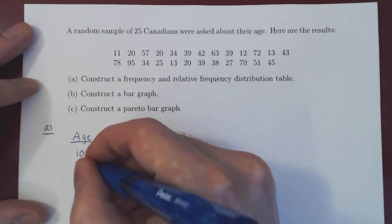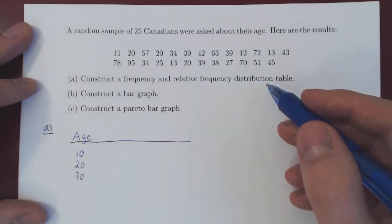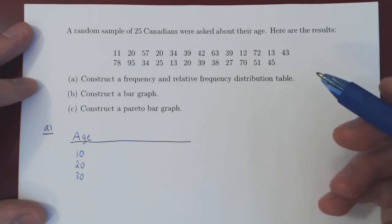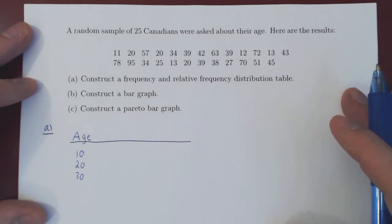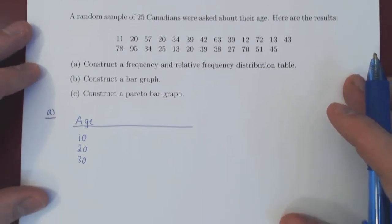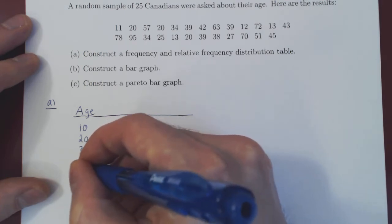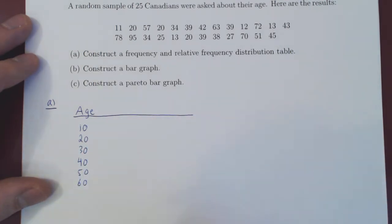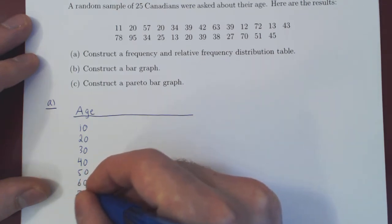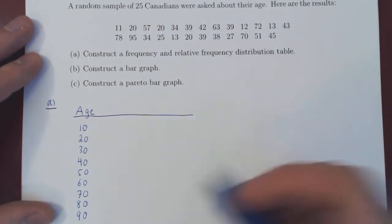And now we need to organize these 25 ages into natural categories, or natural bins. Well, when we deal with ages, it's natural to regroup the data in intervals of 10 years. So people in their teens, in their 20s, and so forth. So, let's do so. So 10, 20, up to, well, the largest age. And here there is someone who is 95, so we have to go up to 90, so people in their 90s.